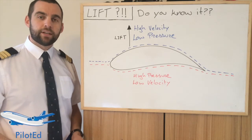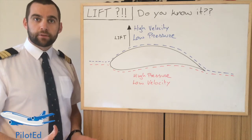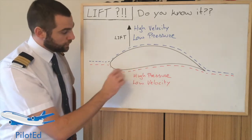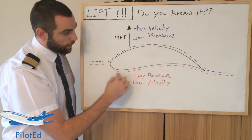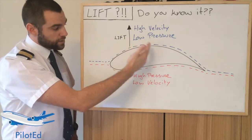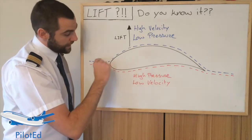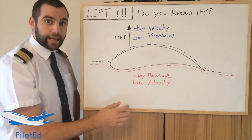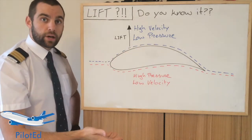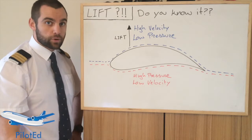The incorrect theory on how lift is generated is sometimes referred to as the longer path or equal transit theory. With this theory, if air particles hit the leading edge of an aerofoil, because it's a longer distance over the top than the bottom, the theory states that speed would increase over the top and be slower at the bottom, so that the particles meet at the trailing edge. That higher speed, from Bernoulli's theorem, would give a lower pressure — low pressure at the top, high pressure at the bottom — and that difference in pressure would generate lift. This is somewhat true, but not correct.